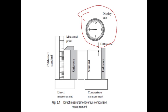So students, this helps to understand the difference between direct measurement and comparison measurement. Accuracy of direct measurement depends on four factors: the accuracy of the standard, the least count of the scale, accuracy of the scale, and accuracy of reading the scale.